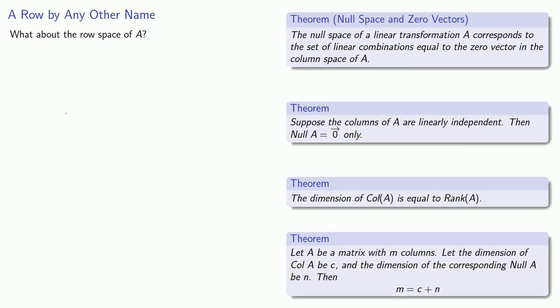What about the row space? Suppose we reduce A to row echelon form and have a row of zeros.